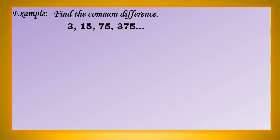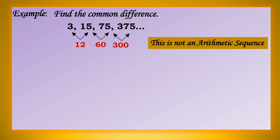Let us find the common difference. 15 minus 3 is 12. 75 minus 15 is 60. 375 minus 75 is 300. Kung mapapansin nyo, iba-iba ang kanyang difference. Sa given sequence, there is no common difference. Therefore, this is not an arithmetic sequence.